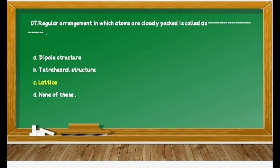Question 27 is on the concept of unit cell: A regular arrangement in which atoms are closely packed is called as dash dash. Options are: A) dipole structure, B) tetrahedral structure, C) lattice, D) none of these. We know that this is the definition of lattice. Therefore, option C is correct.